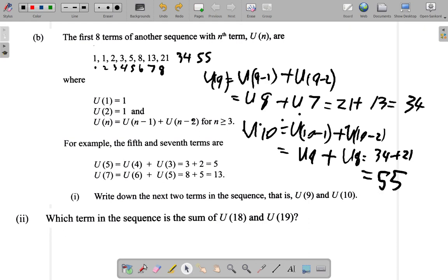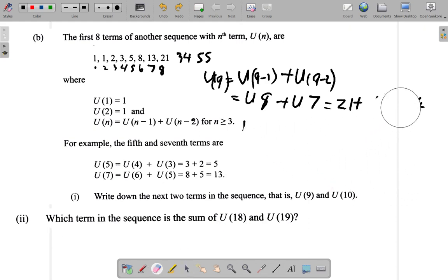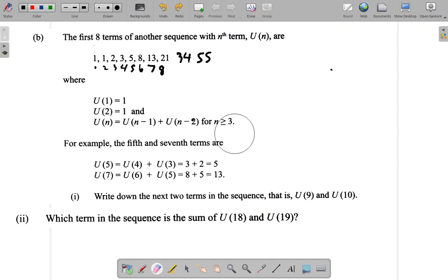Alright, let me just get rid of some of these things to make some space. Now, what is this sum of U(18) and U(19)?